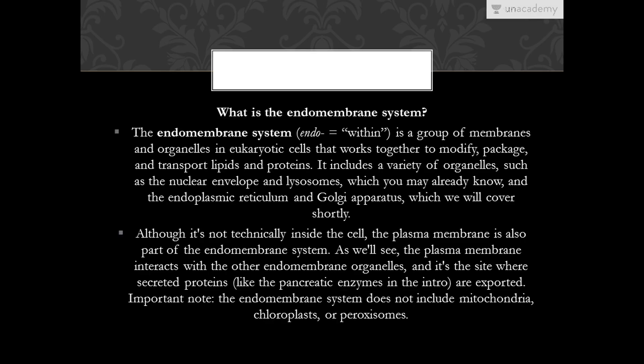What is the endomembrane system? The endomembrane system is a group of membranes and organelles in the eukaryotic cell that works together to modify, package and transport lipids and proteins. It includes a variety of organelles such as the nuclear envelope and lysosomes, as well as the endoplasmic reticulum and the Golgi apparatus, which we will cover shortly.